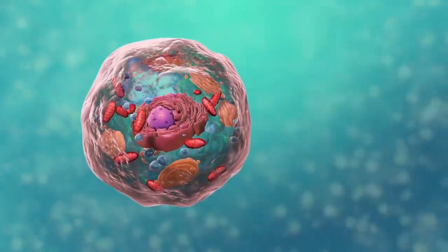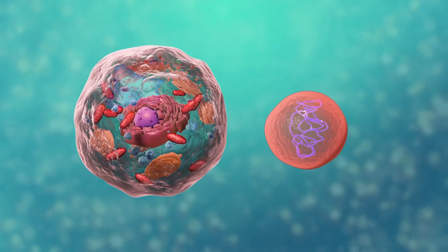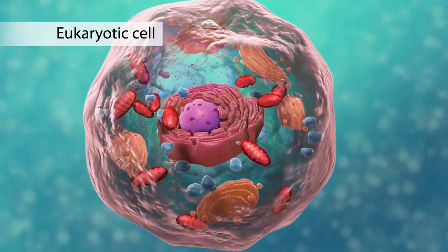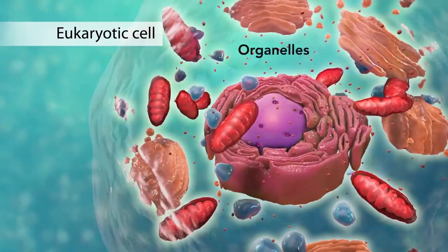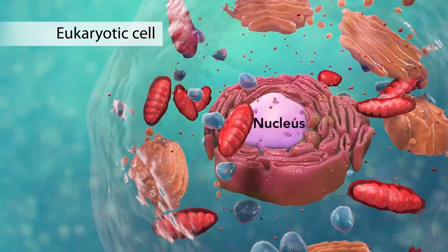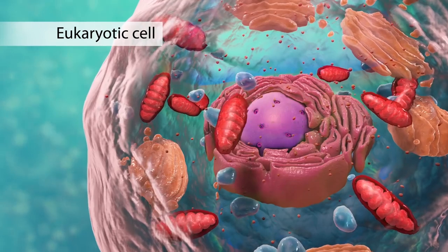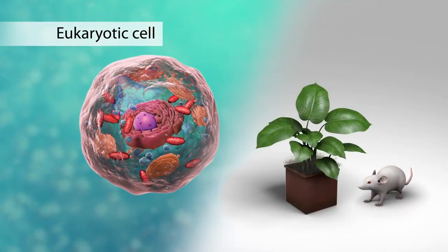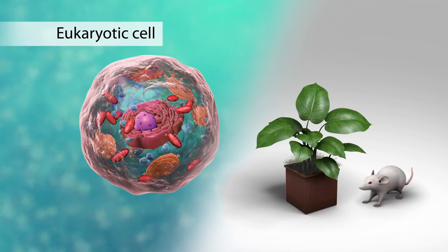There are two broad categories of cells. The first category is eukaryotic cells. They have organelles which include the nucleus and other special parts. Eukaryotic cells are more advanced complex cells such as those found in plants and animals.